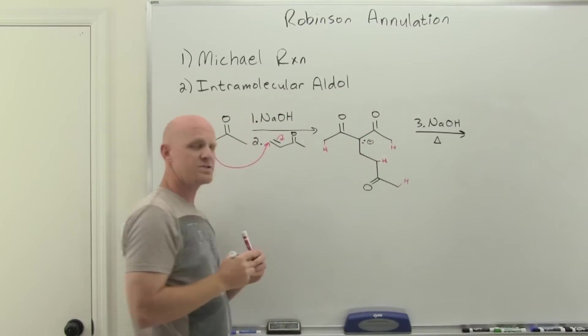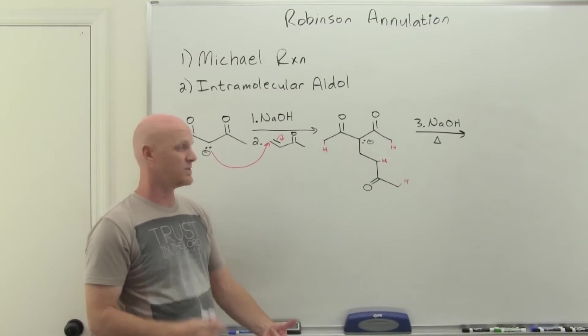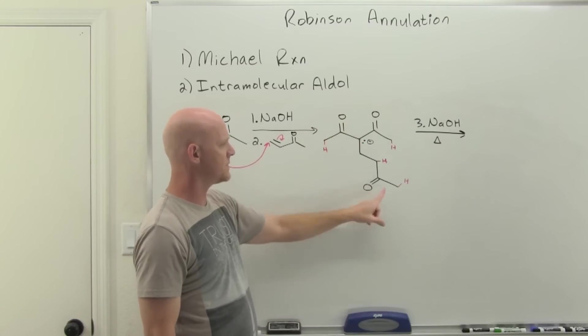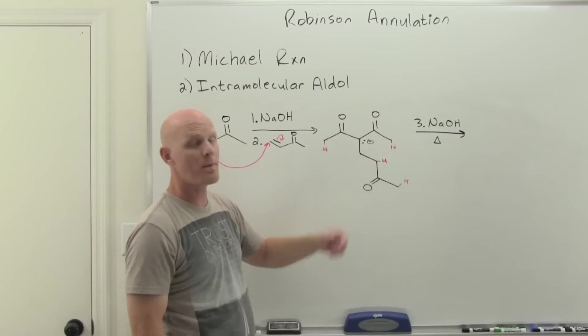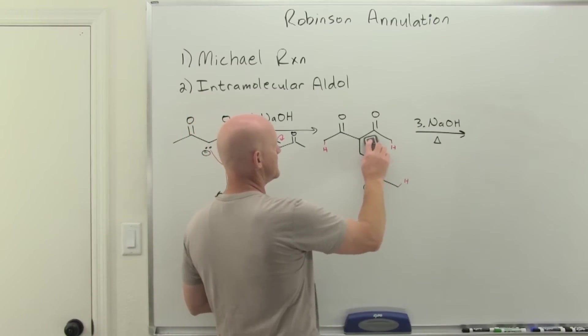So you might recall with your intramolecular aldol reaction, a five or six-membered ring is likely. Smaller or larger than that, not so likely. And in this case, he's an enolate with both these carbonyls. So the only one he can attack is this one over here. That would just form a one, two, three, four-membered ring. That's not going to happen. So we don't have to consider him. We'll rule him out.